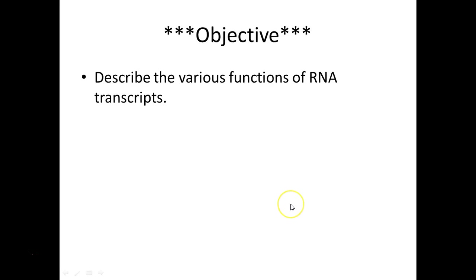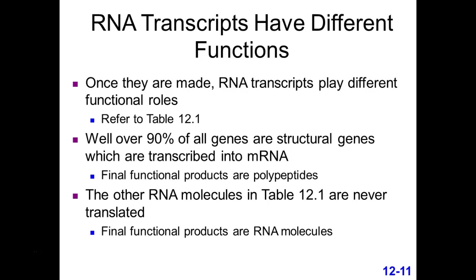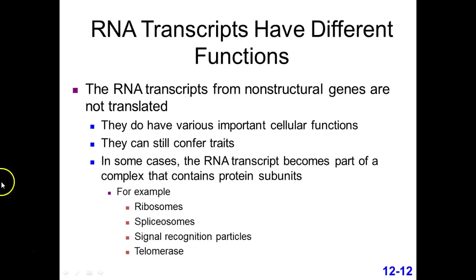What are the various functions of RNA transcripts? Most of the time we're making messenger RNA from DNA that's going to be translated by the ribosome into a protein — about 90% of all genes in the genome code for proteins. The rest are RNAs that are a functional gene product — they make these RNAs directly from the DNA.